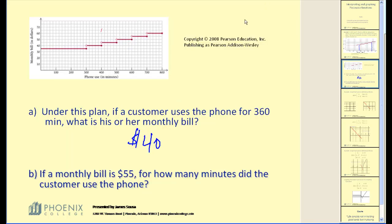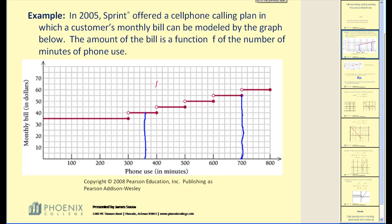The next question: if a monthly bill is $55, for how many minutes did the customer use the phone? Well, we just kind of started analyzing that. If the person paid $55, notice there's a horizontal interval where the bill is $55.